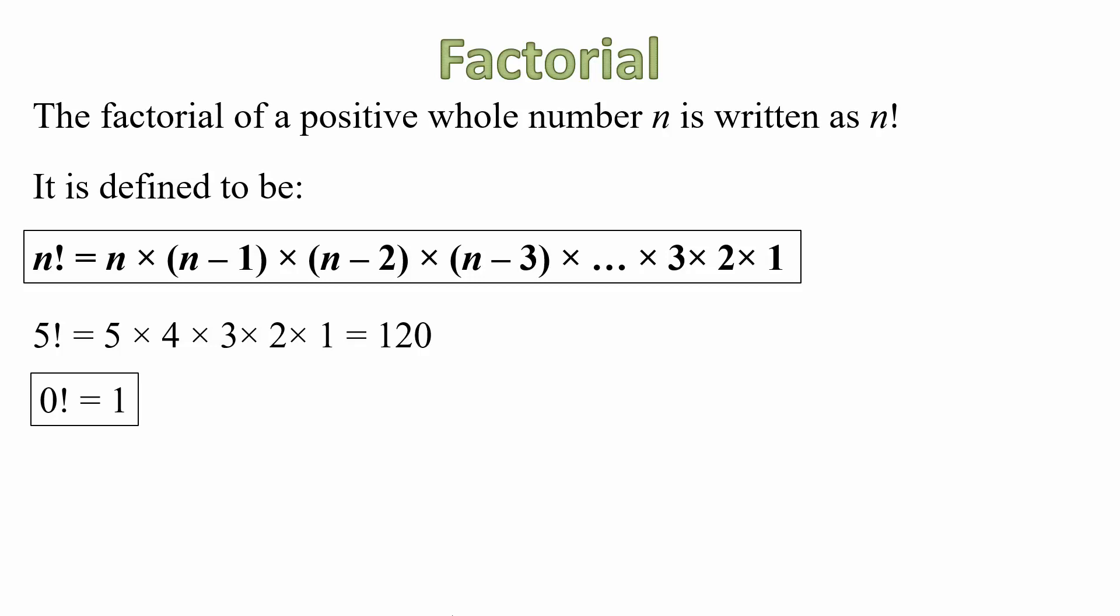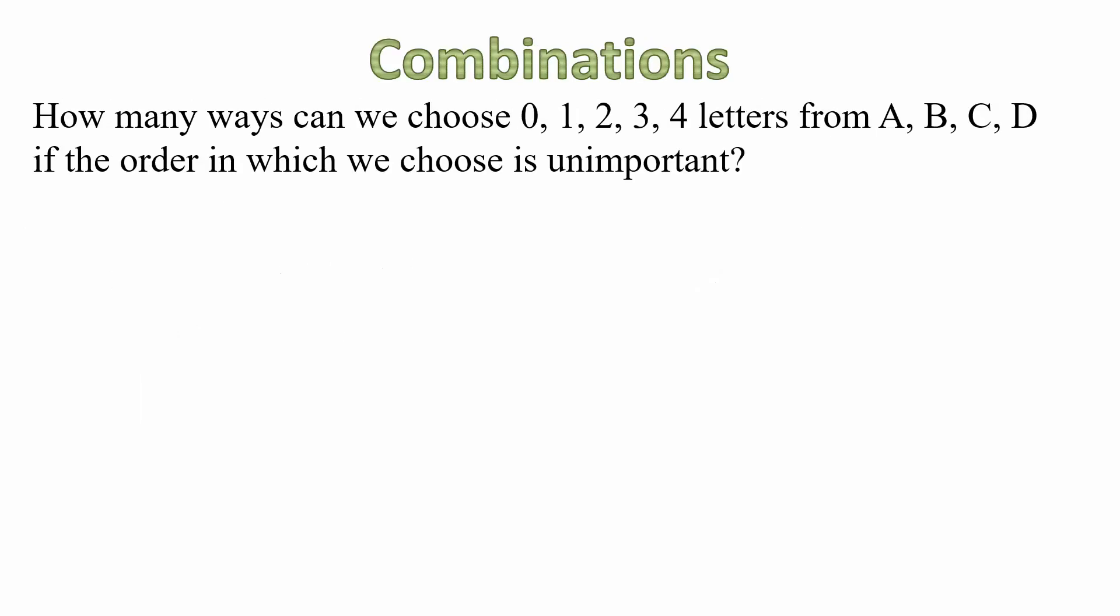Now if you have access to a graphics calculator or a scientific calculator, you'll find that it has inbuilt functions to work out factorials. You might want to investigate that. Now, let's apply that idea to an example. Let's suppose we have four letters, A, B, C and D. We want to know in how many ways can we choose 0, 1, 2, 3 or 4 letters, given that the order of choosing letters is unimportant.